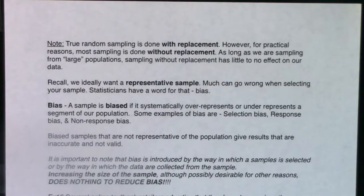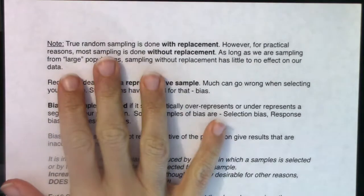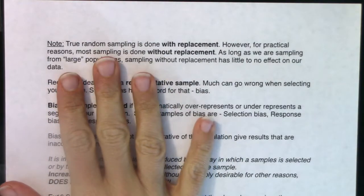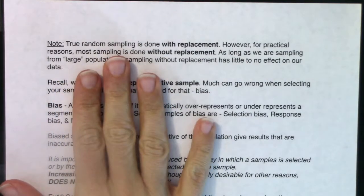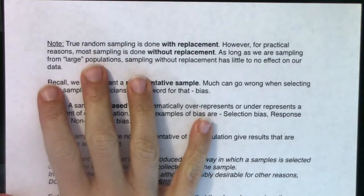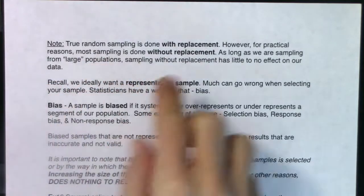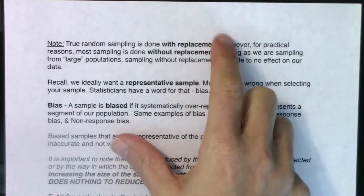Now that we've looked at a few examples of what type of sampling method we've been using, I just want to mention that true random sampling is done with replacement. However, for practical reasons, most sampling is done without replacement. Let me talk about these two ideas.